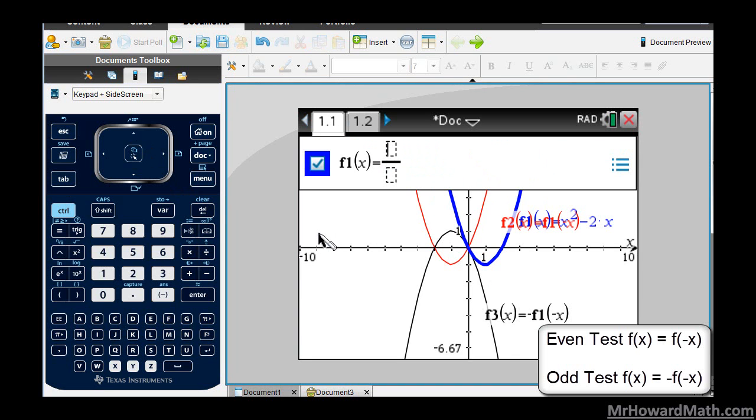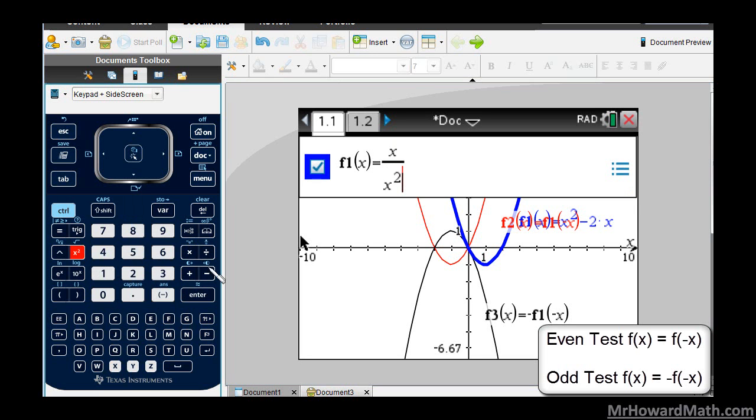The next one, we're going to put in this one. It's a rational, so I'm going to use the fraction button, the symbol button right here gives me that fraction option, makes it easy. I'm going to put in X in the numerator, and I'm going to put in X squared minus 1 in the denominator. Hit enter.